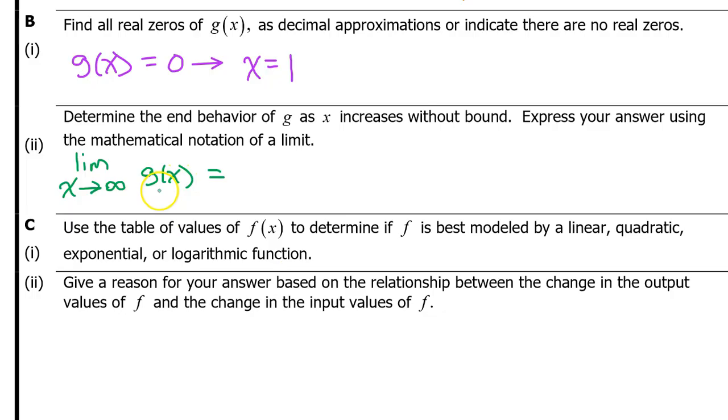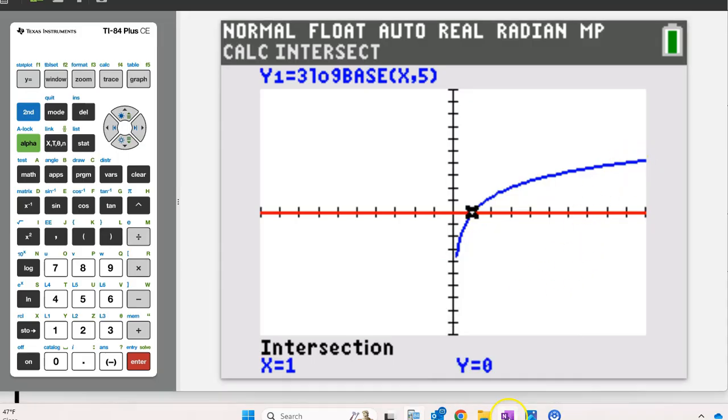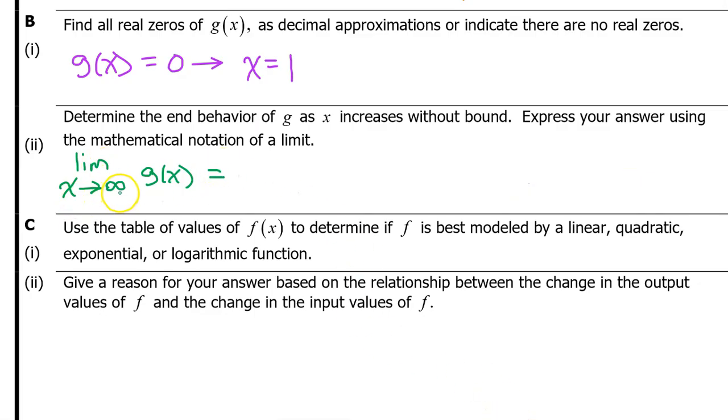We already have this typed into the calculator, so let's just look back at it. And in fact, this blue graph right here is g. As x approaches infinity, the value of g increases without bound. It just goes up and up and up. Therefore, the limit as x approaches infinity of g of x equals infinity. And that's it for B part 2.